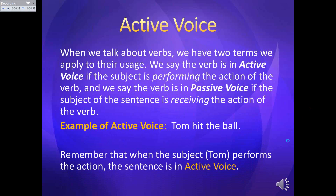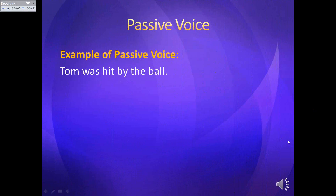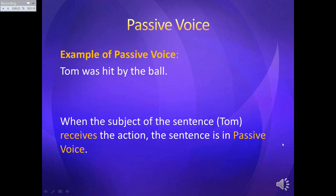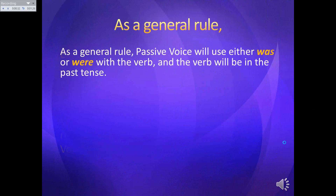It's easy to remember — action, active. Then with passive voice, the subject receives the action. Here we've got: Tom was hit by the ball. If Tom is out on a baseball field and he's being passive, not doing anything, just standing there like a bump on a log, he likely will be hit. He receives the action of the ball. When the subject of the sentence receives the action, your sentence is in passive voice.